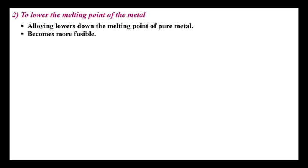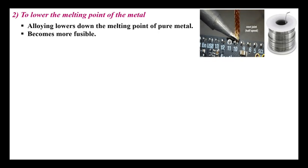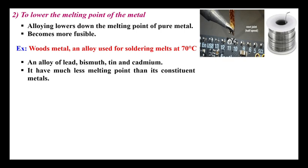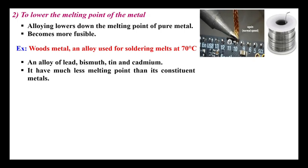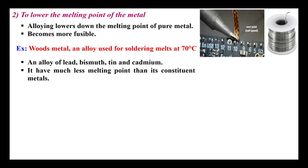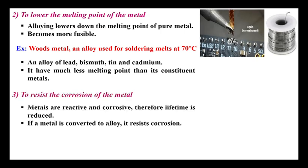The second point of significance is to lower the melting point of the metal. Usually metals have high melting points, but when changed into an alloy the melting point gets lowered, making the alloy more fusible. For example, in electrical shops the soldering process makes use of an alloy called Wood's metal, used for soldering, which melts at 70 degrees Celsius. Wood's metal comprises lead, bismuth, tin, and cadmium, and its melting point of 70°C is much lower than that of its individual constituent metals.